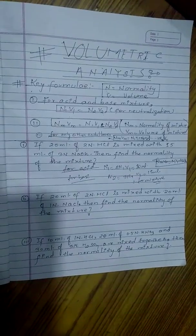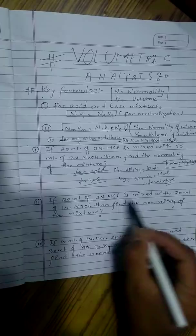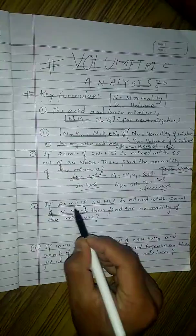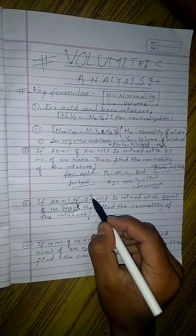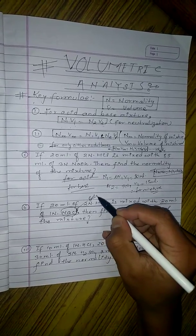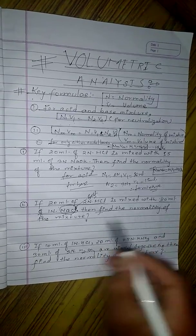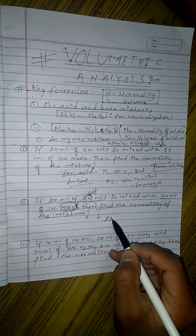20 ml of 2N HCl mixed with 20 ml of 1N NaCl. Here NaCl is neither the acid nor the base, it's the salt. So it doesn't react with the salt, so the final normality of the mixture will be that of acid. So answer is 2N.